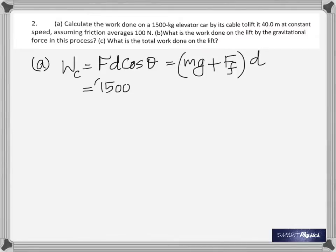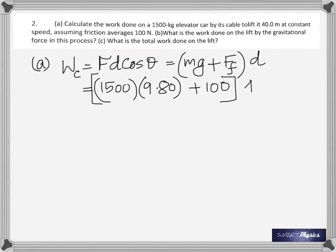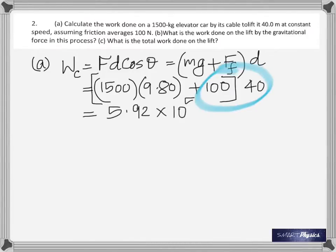Mass is 1500 times 9.8, plus friction of 100 — add them up and multiply by 40. That gives 5.92 times 10 to the 5 joules.